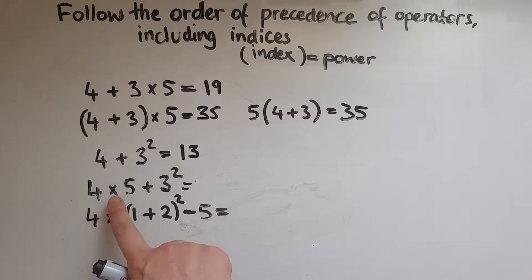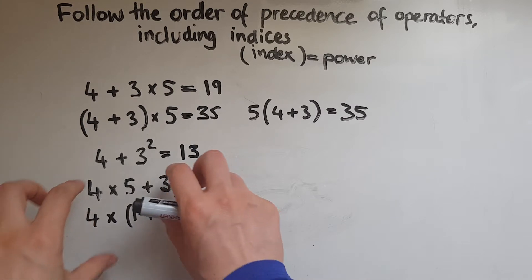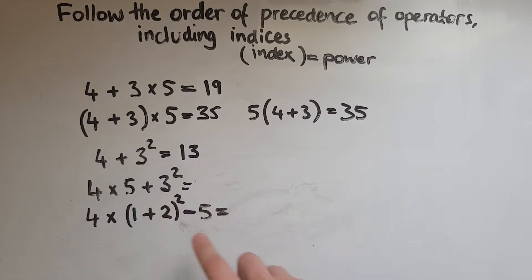4 lots of 5 or 4 times 5, add 3 squared. So 4 lots of 5 and these are being added together with 3 squared. So 4 lots of 5 is 20, add 3 squared which is 9, so that makes 29 altogether.